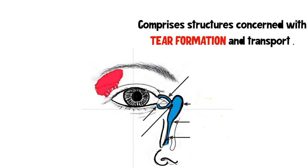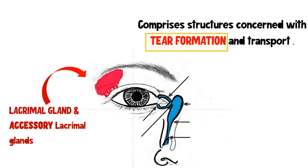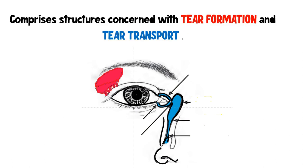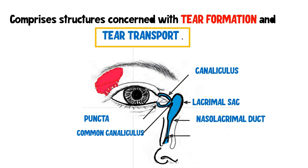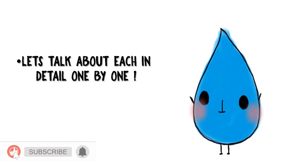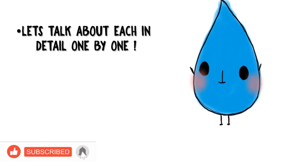The lacrimal apparatus basically comprises structures concerned with tear formation and tear transport. For tear formation, we have the lacrimal gland and the accessory lacrimal glands. For tear transport, we have the puncta, then the canaliculus, the common canaliculus, the lacrimal sac, the nasolacrimal duct, and the opening of the nasolacrimal duct guarded by the valve of Hasner. Now let us talk about each in detail one by one.